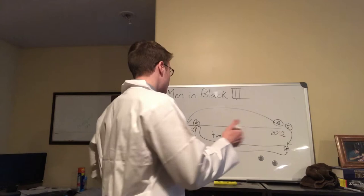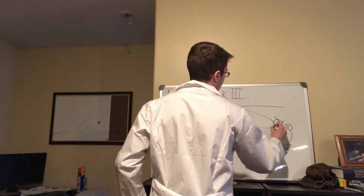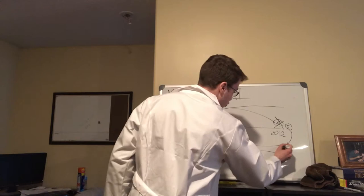This creates a third timeline where Boris the Animal is dead, both past and present self from this timeline. Agent K survives and Agent J survives. So this created three timelines, three timelines in the movie.